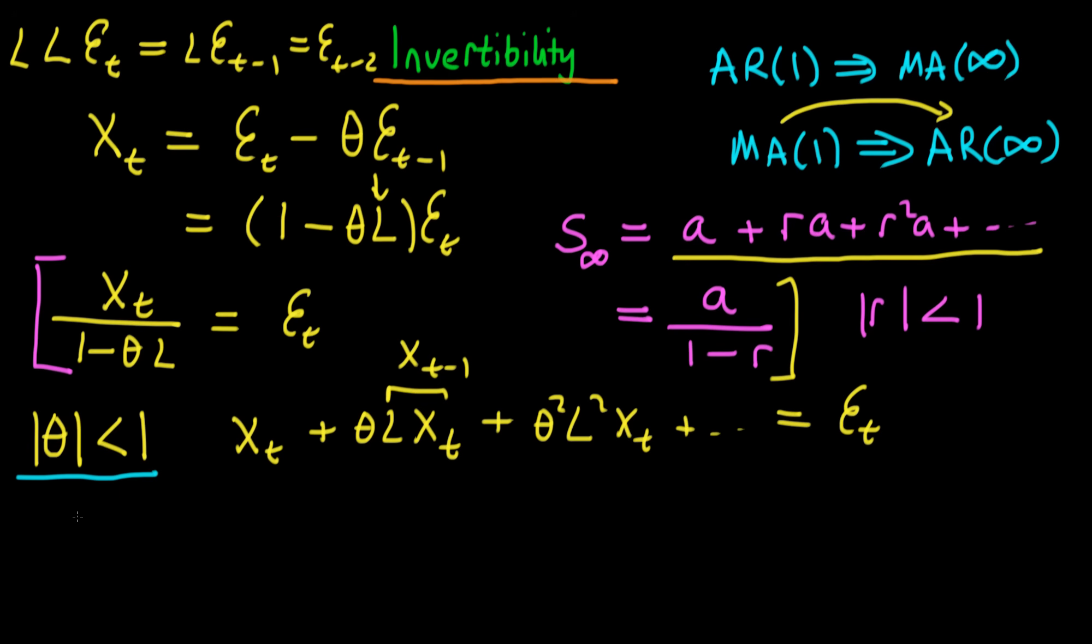So then we can actually take all these things over to the other side and the whole expression looks a bit easier. So then we have the XT is equal to minus theta times XT minus 1 minus theta squared times XT minus 2 minus essentially theta cubed we would have times XT minus 3 continuing on forever and then finally we have this solitary error term at the end here.